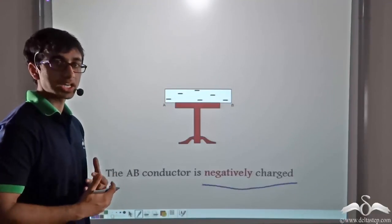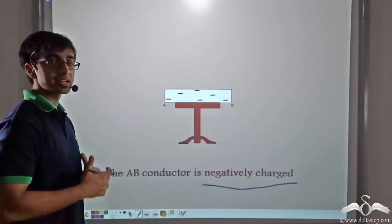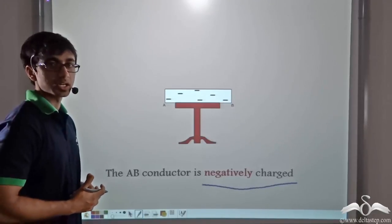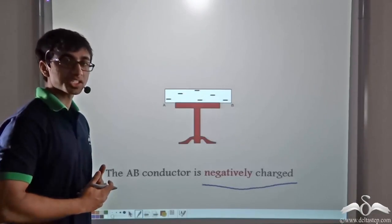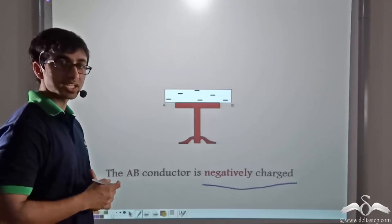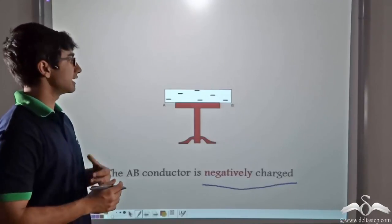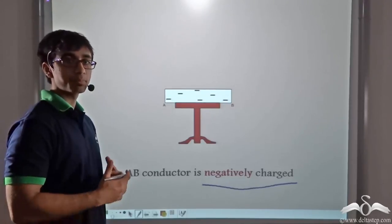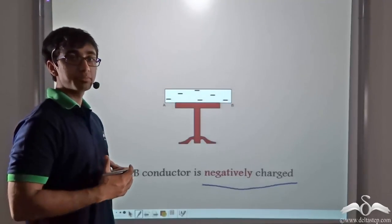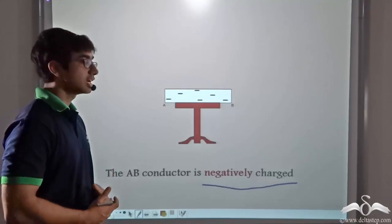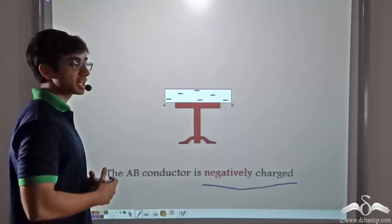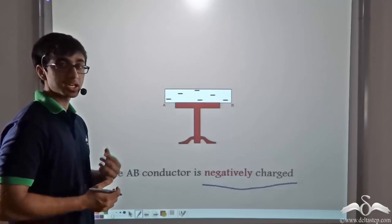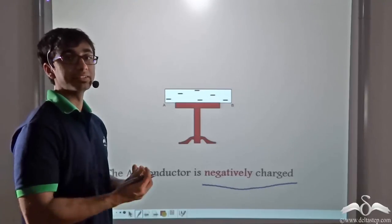So we saw through conduction how we can obtain a negatively charged conductor and a positively charged conductor. In the case of conduction, if we bring in a positively charged rod, there will be a deficiency of electrons in the conductor and it will get positively charged. And if we bring in a negatively charged rod and touch it to the conductor, there will be an excess of electrons in the conductor and it will get negatively charged.